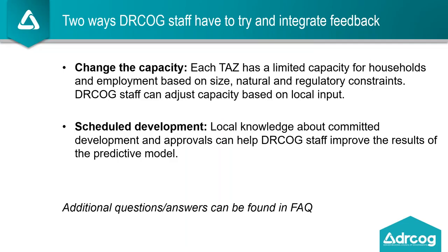Thank you, Andy. This is Joffrey Kiapela. There are a couple of ways that DRCOG staff can attempt to integrate your feedback in this modeling process. One is to change the capacity — each traffic analysis zone or TAZ has a limited capacity for households and employment based on the size of the TAZ and whether there are natural or regulatory constraints. We can adjust that capacity on the household or employment side based on your input. The other way is through scheduled development — projects that are under construction, approved, or otherwise known in your community. Please provide information on these projects where you believe we may have missed them so our team can improve the results of the predictive model.